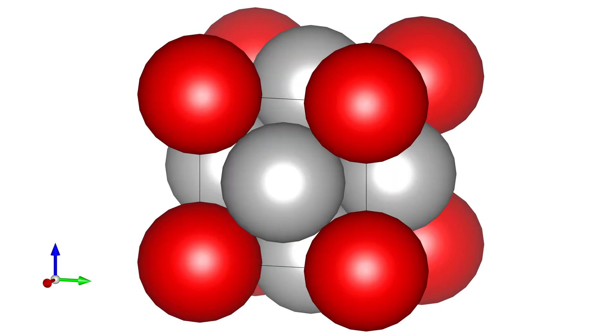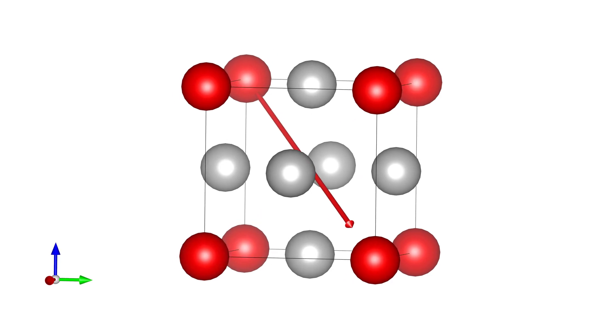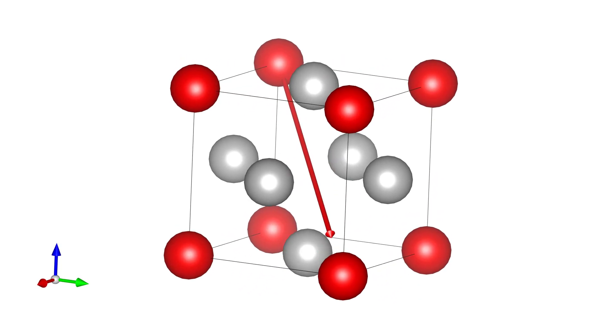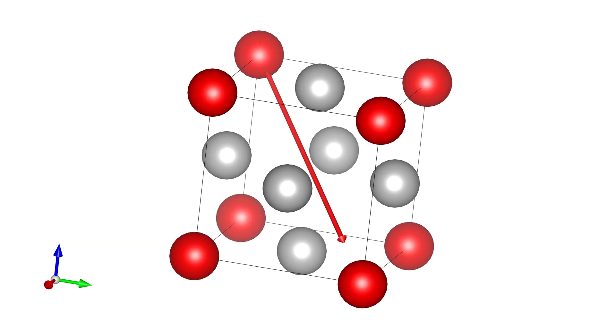It may be easier to view this instead of a space filling model, we'll decrease the diameters of the atoms so we can see a bit more clearly. And here's the direction again that we're looking at, is the 1, 1, negative 1 direction. We want to figure out the linear density along that line.